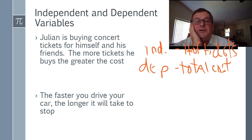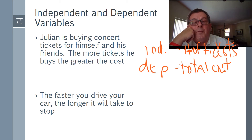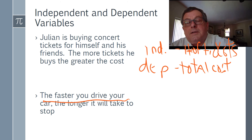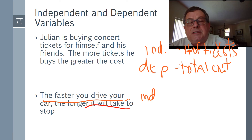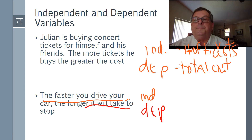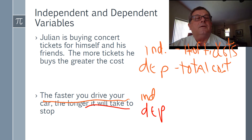Next example: the faster you drive your car, the longer it will take to stop. What is the independent variable — the factor that changes and causes a change in stopping time? The speed at which you drive your car is the independent variable. The faster you drive, the longer it takes to stop — a classic driver's ed question.